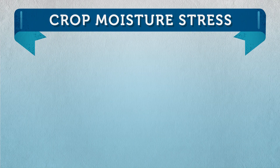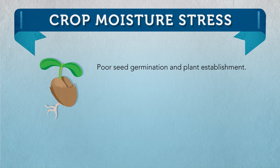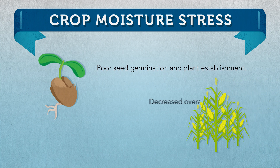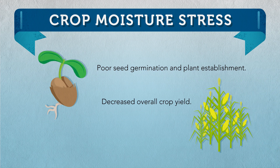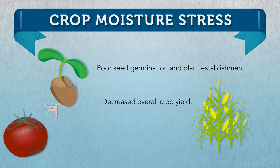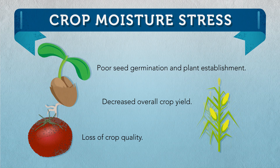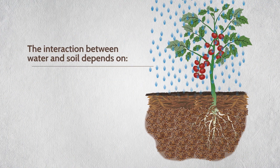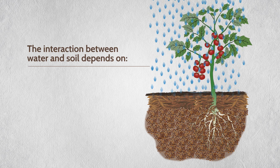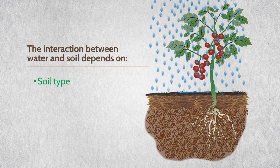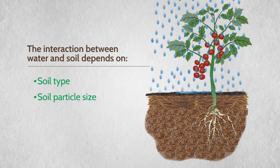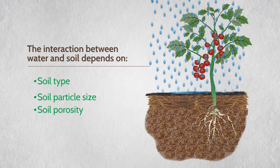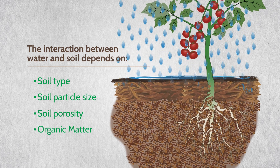Crop moisture stress can cause poor seed germination and plant establishment, decreased overall crop yield, and loss of crop quality. The interaction between water and soil depends on factors such as soil type, soil particle size, soil porosity, and organic matter.